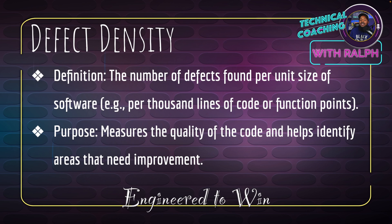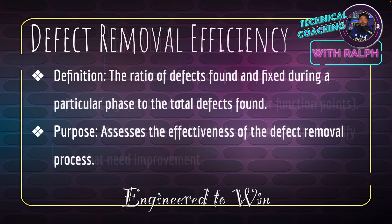Defect density is the number of defects found per unit size of software — for example, per thousand lines of code or function points. Its purpose is to measure the quality of the code and identify areas needing improvement, such as whether unit tests are actually catching real problems. Defect removal efficiency (DRE) is the ratio of defects found and fixed during a particular phase to the total defects found, assessing how effectively and quickly defects are removed.